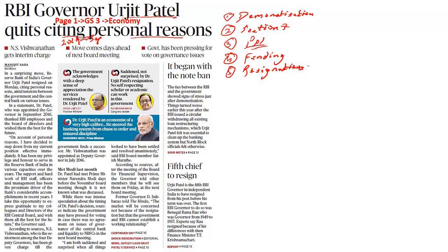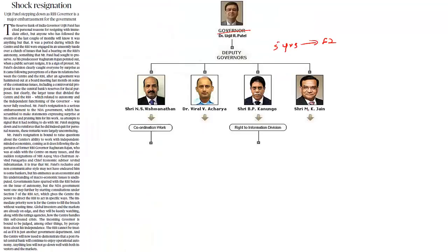What are the possible implications of this decision? Once Urjit Patel resigned, what could be the impact? Currently, the most senior person in this architecture is Vishwanath, so he will be taking up as governor until the government comes up with a suitable name. Mr. Vishwanathan will serve as governor as long as the government is able to find a suitable replacement for Mr. Urjit Patel.